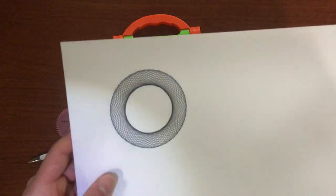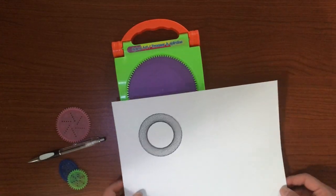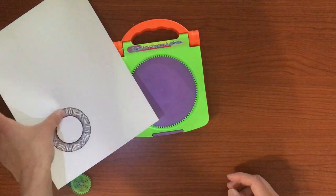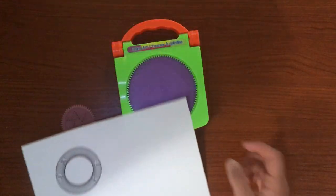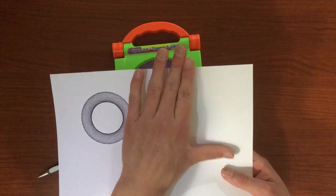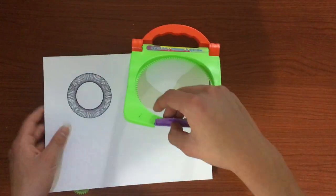I'm using an eight and a half by eleven, a letter size piece of paper. What I like to do is my first one in the corner and my second one in the other corner, so that way I can fit a third one in the middle.